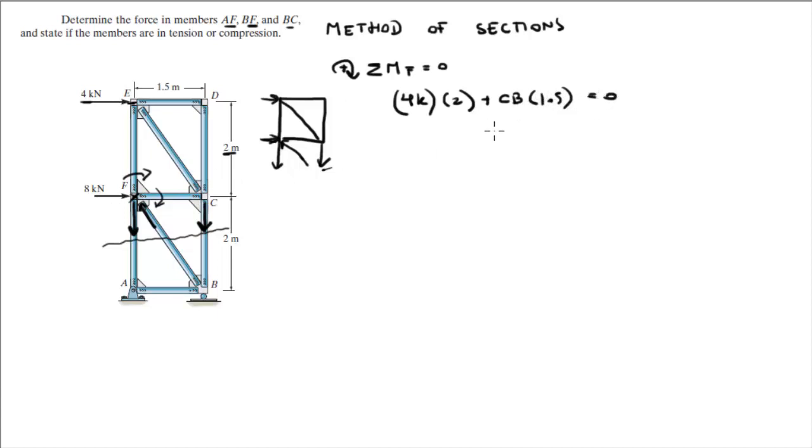So when you solve for CB, you get that CB is equal to negative 5.33 kN. Obviously, because it's negative and we assumed that it was going down, you know that it's not going down and it's actually going up. So let's put CB is equal to 5.33 kN going up, and let's correct it on the diagram so we don't get confused later.